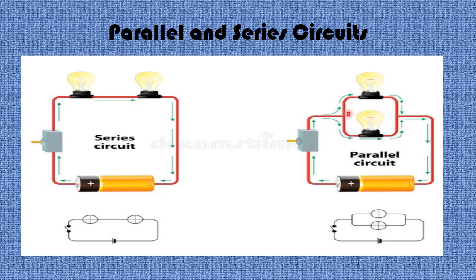In a parallel circuit, components are connected in such a way that it creates more than one path for electrons. As you can see from the diagram, there is a branching that allows two paths for electrons to flow. This is the parallel circuit diagram, and here is the series circuit diagram for comparison.